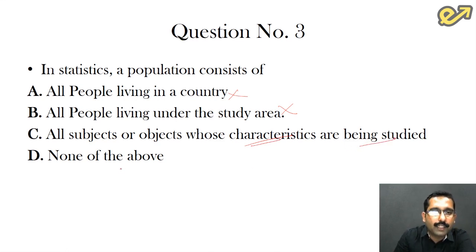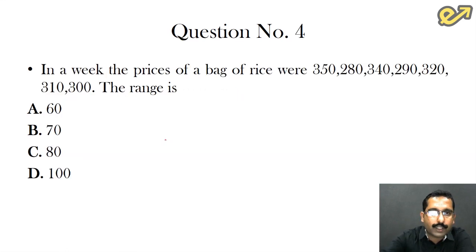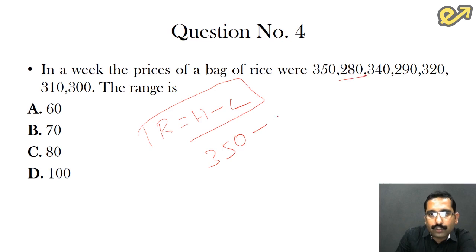The next question is: in a week the prices of a bag of rice were 350, 280, 340, 290, 320, 310, 300. The range is? Now how do we calculate the range? Range is equal to the highest value minus the lowest value. In this case, the highest value is 350 and the lowest value is 280, so 350 minus 280. The answer is 70, and in this case it is option B.